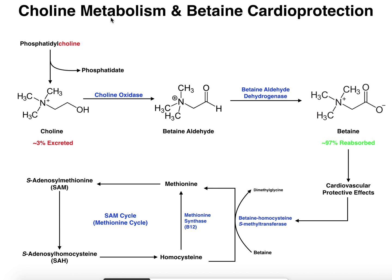We're going to talk about choline metabolism, and we're also going to see that there's a byproduct called betaine, which can still be metabolized further. Betaine actually provides some cardioprotection, which we'll talk about throughout this video. So phosphatidylcholine gets degraded into choline, and the remainder is phosphatidate, which can be used for other things.